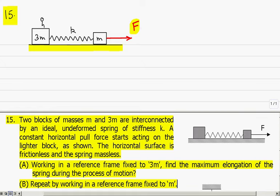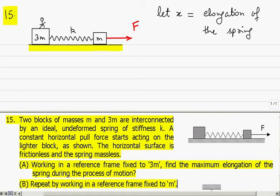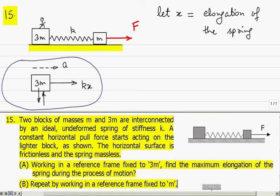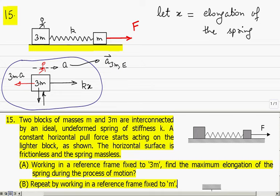In part A, we assume the observer watching the motion of the other block is fixed to the frame of 3M. Let X be the elongation of the spring, then the tensile force in the spring would be KX at any moment, so that the free body diagrams of the two blocks will be as shown. On the block of mass 3M, the force acting towards the right would be KX, while if this block has an acceleration A towards the right, then for this observer the pseudo force on this block will be towards the left and in magnitude equal to 3M times A.